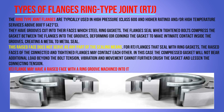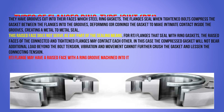When the bolts are tightened, they compress the gasket between the flanges into the grooves, deforming and pressing the gasket to make intimate contact inside the grooves, creating a metal-to-metal seal. The raised face does not serve as any part of the sealing means for RTJ flanges — sealing is achieved with the ring gaskets. The raised faces of connected and tightened flanges may contact each other; in this case the compressed gasket will not bear additional load beyond bolt tension, and vibration cannot further crush the gasket.